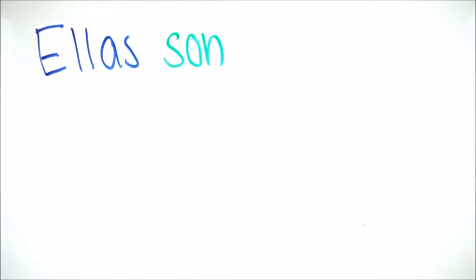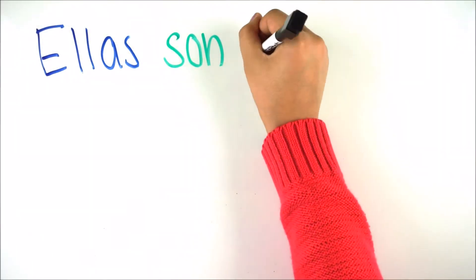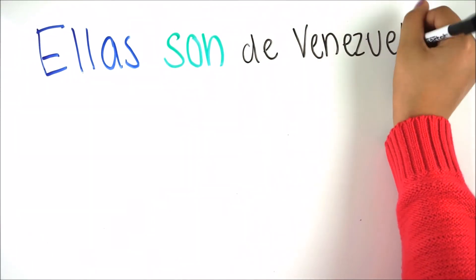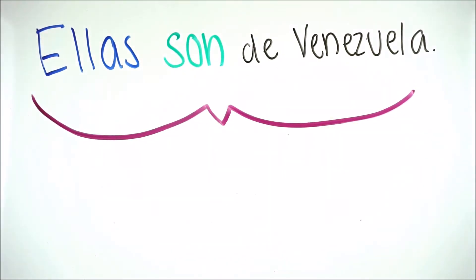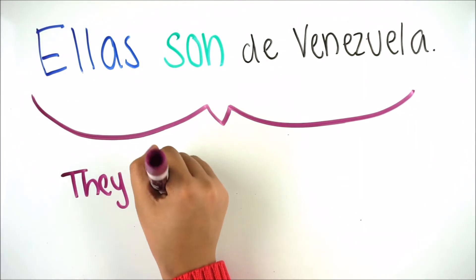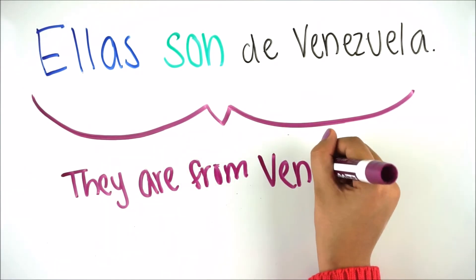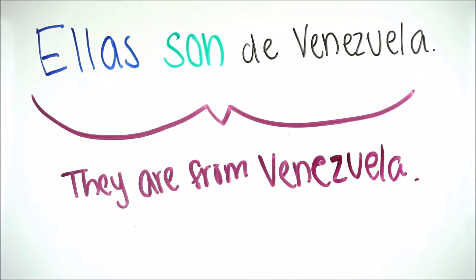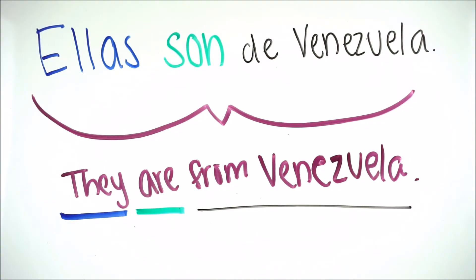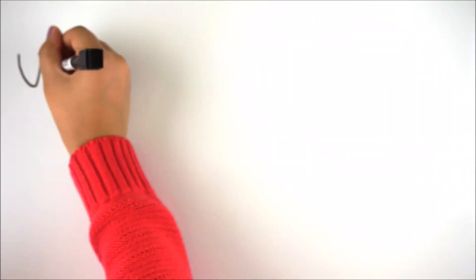For example, we have the sentence 'Ellas son de Venezuela,' and in English that translates to 'They are from Venezuela.' So ellas is the subject pronoun, just as 'they' is in English. Son is the ser conjugation meaning 'are,' and 'de Venezuela' is the rest of the sentence.